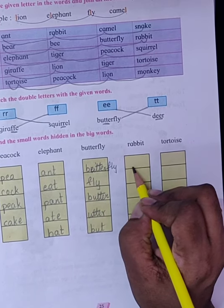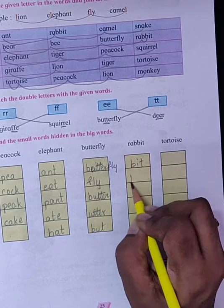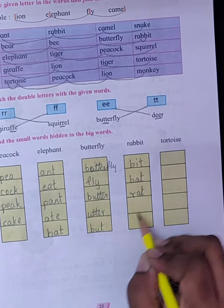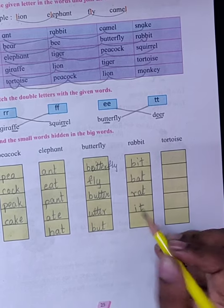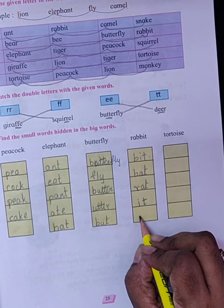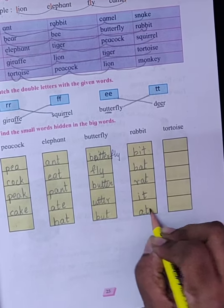Rabbit. So it will be bit, bat, rat, it, and at.